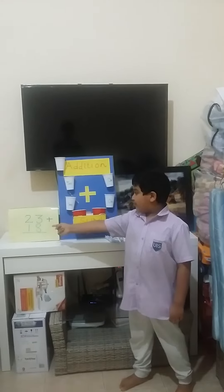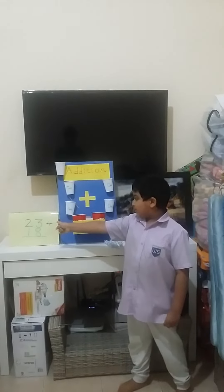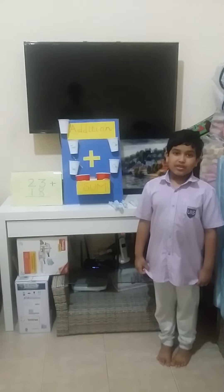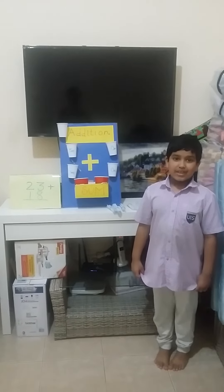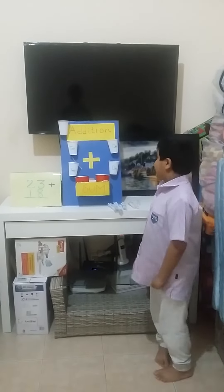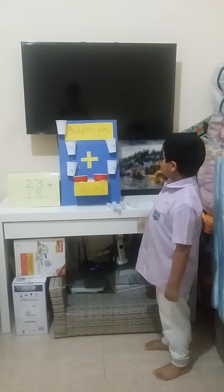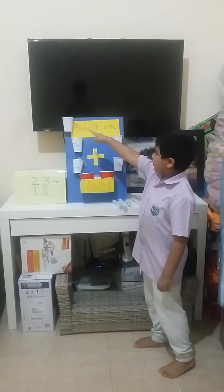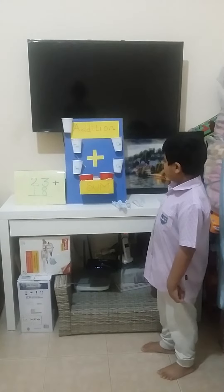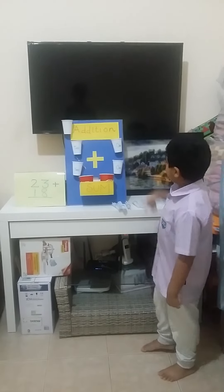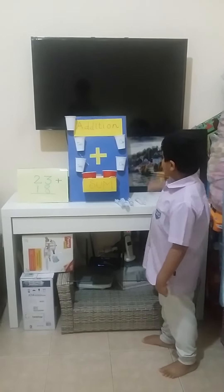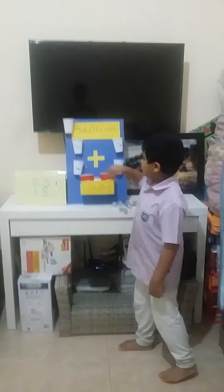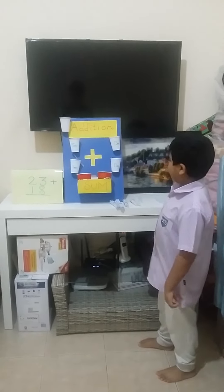We can take an example of 23 plus 18. Before that I need to introduce my Addition Machine. These four white cups are the Addends. And this is the Carry Forward cup. And these two red cups are the Sum. These two cups are the 1's cup and these two cups are the 10's cup.